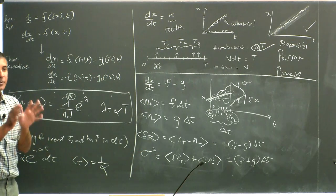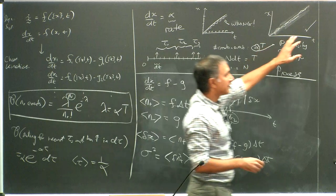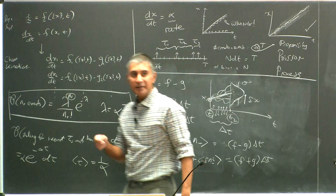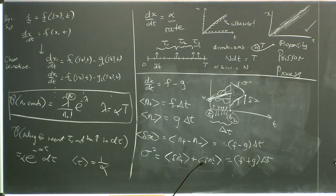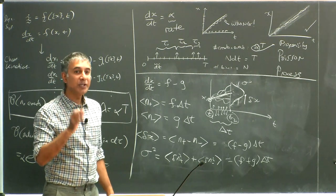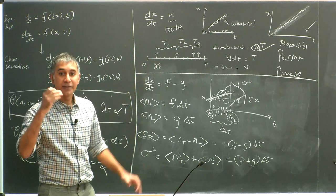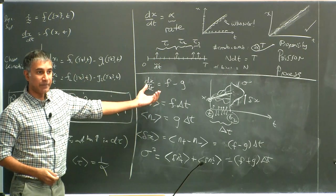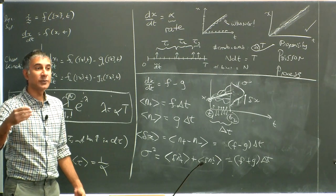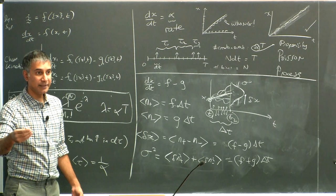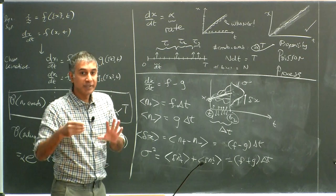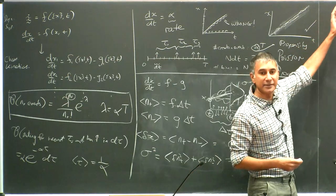There are hidden assumptions, approximations, and potential mistakes in this kind of view. I'm going to show you three different ways to think about this equation, all of which give you a recipe for calculating the results. Two of those ways will be exact. So there's actually no excuse in chemical kinetics for using only this kind of description.